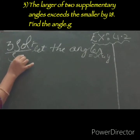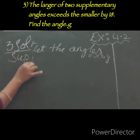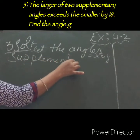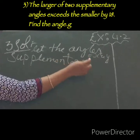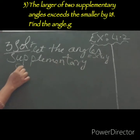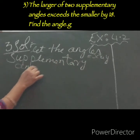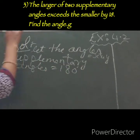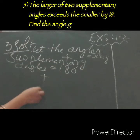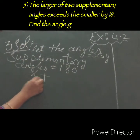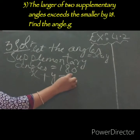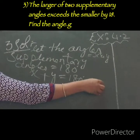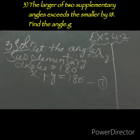Now, as you know supplementary angles, the sum of supplementary angles equals 180 degrees. So one angle is X, another angle is Y, equals to 180 degrees. This is your first equation.